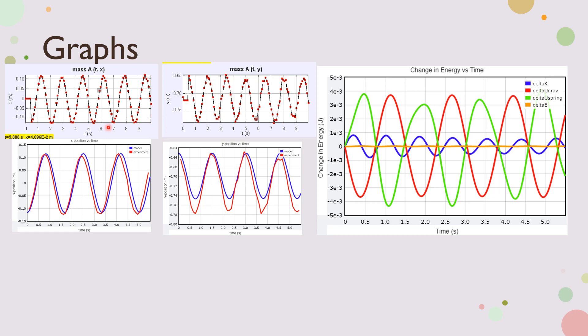So this is the tracker change in position versus time versus the GlowScript. And same with y. These are very similar. And as you can see, I'll talk about this graph later, but this is the spring potential, gravitational potential, and kinetic is in blue, and delta energy is zero constantly.